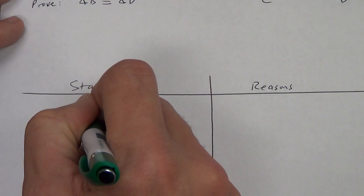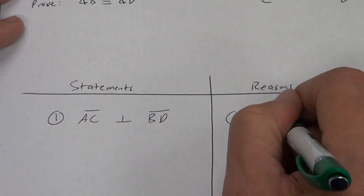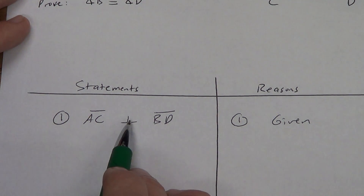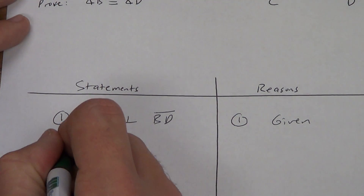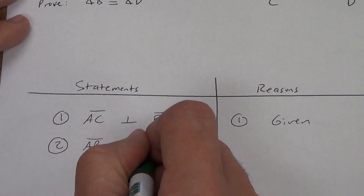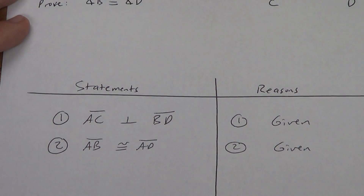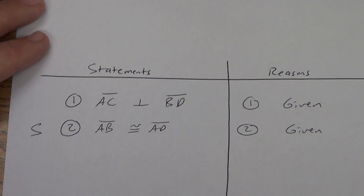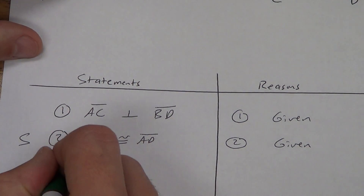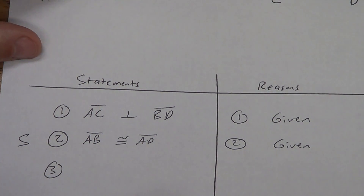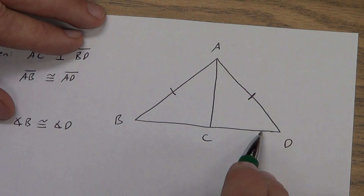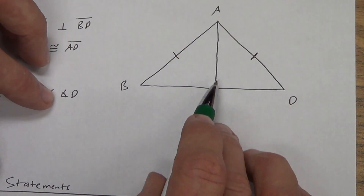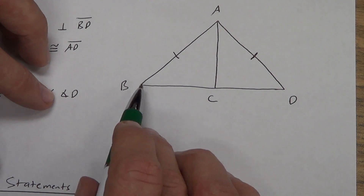I'm going to start with AC is perpendicular to BD — that's a given. I cannot write anything off to the side because I didn't say there were any congruent sides or angles. This says perpendicular, not congruent. Step two: AB is congruent to AD — that's also a given. Let's mark that in our picture. AB is congruent to AD — that is a side of my two triangles, so I'm going to put an S right here for side.